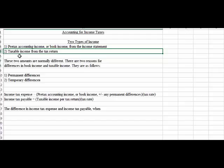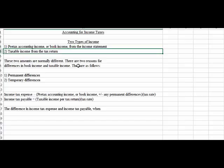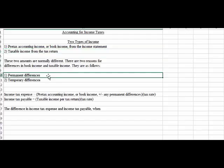Okay, so normally these two amounts are going to be different because this number was calculated using generally accepted accounting principles and this number was calculated using the tax code. Okay, there are two reasons why these numbers are different. When we get into more specific terms, there could be permanent differences in the two.